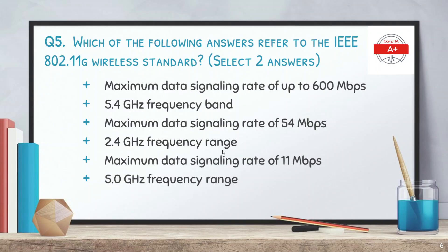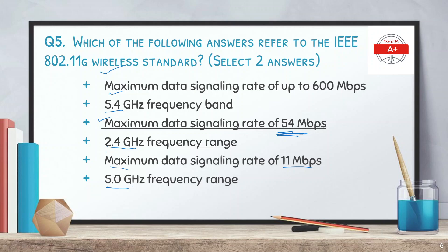Question 5: Which of the following answers refers to the IEEE 802.11g wireless standard — select 2 answers. The options are: maximum data signaling rate of 600 Mbps, 5.0 GHz, 5.4 GHz frequency band, maximum data signaling rate of 54 Mbps, and 2.4 GHz frequency band. The correct options are: maximum data signaling rate of 54 Mbps and the 2.4 GHz frequency band.